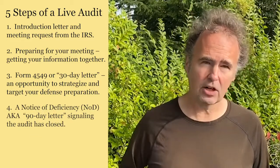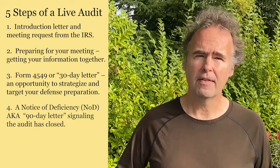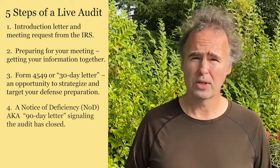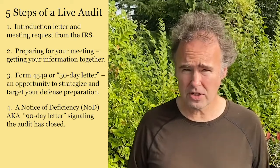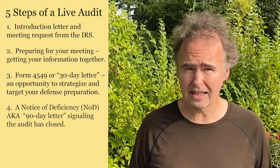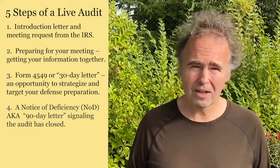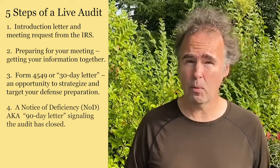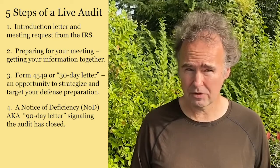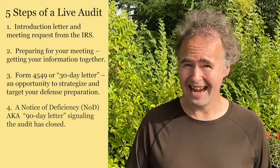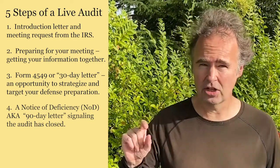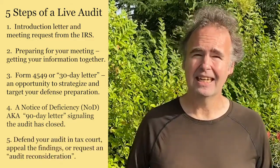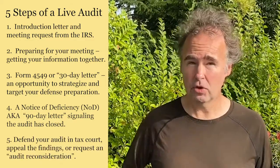Once a 30-day letter is passed, or they send you a revised 30-day letter after you've replied to it, then comes part four — they'll send you a Notice of Deficiency, also called the 90-day letter. For all intents and purposes, your audit is closed, and they give you one final opportunity to go to tax court, set within 90 days. You'll see the date on the Notice of Deficiency.